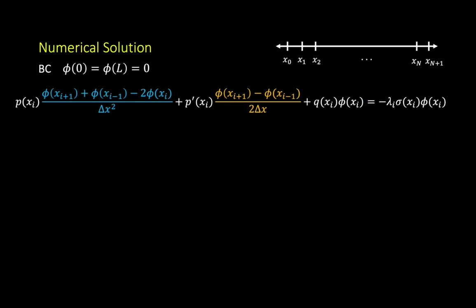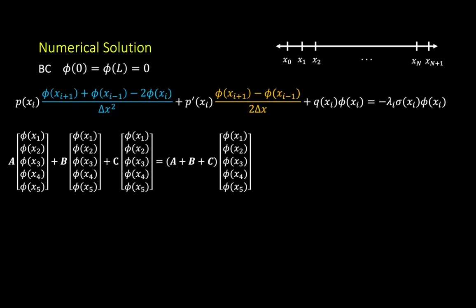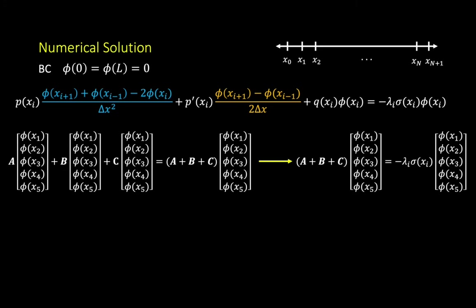Now, the left-hand side of the SLEP can be approximated by the combination of the matrices A times phi, B times phi, and C times phi. And this is the same as A plus B plus C times phi due to the linearity. Therefore, the Sturm-Liouville eigenvalue problem is numerically represented as the following equation. Have you noticed something very interesting? Yes, this is in the form of a generalized eigenvalue problem, going back to what we learned in linear algebra.